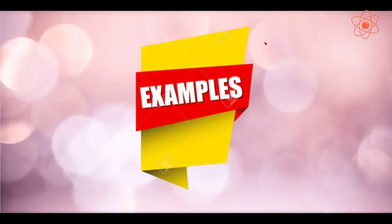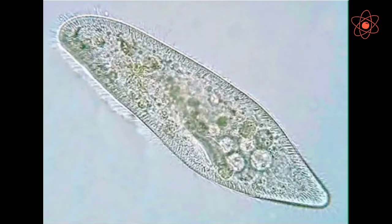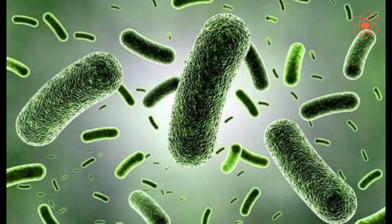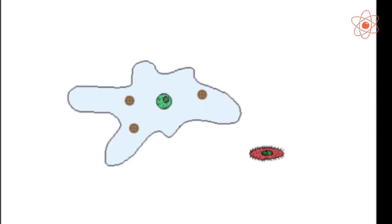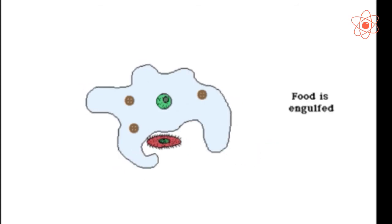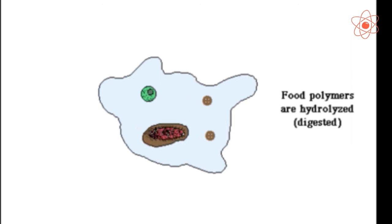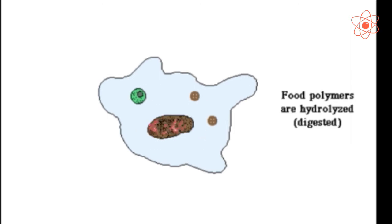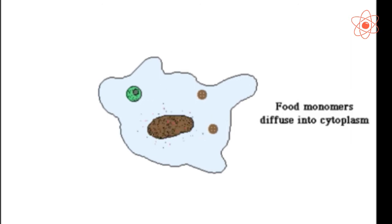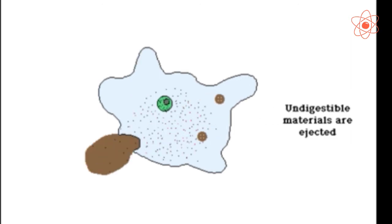For example, amoeba, paramecium, euglena, bacteria. In these organisms, a single cell can perform all the life processes such as digestion, respiration, excretion and growth.